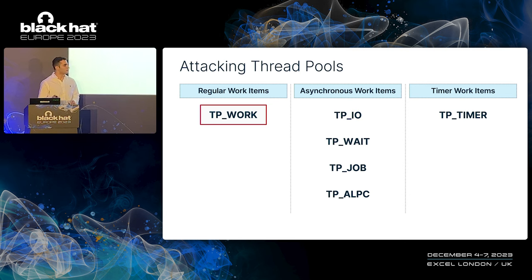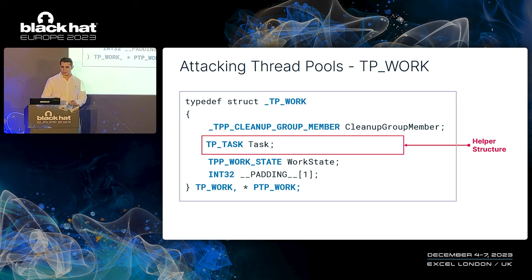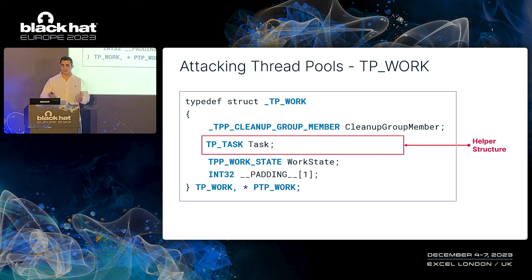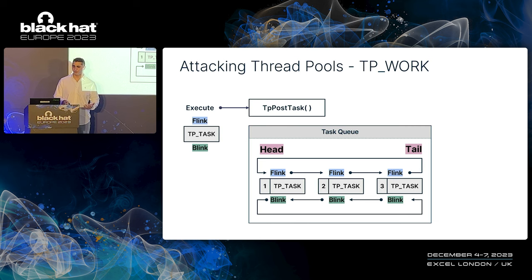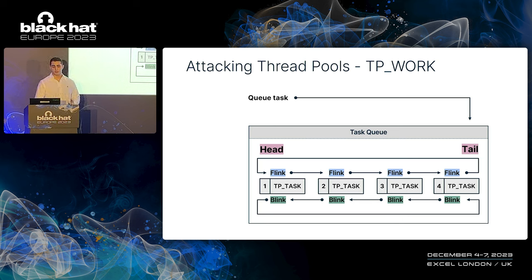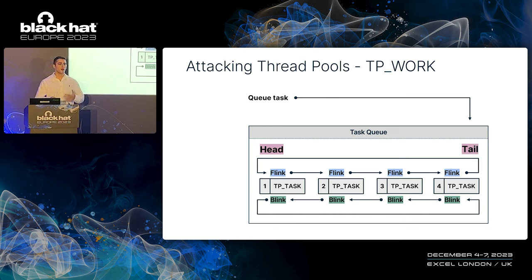Let's start with the regular work item, the TP work. By looking closely at the work item structure, I found its helper part called the task structure — this is what gets put in the task queue of the thread pool. The API responsible for posting a task to the thread pool's task queue is the TpPostTask API. The thread pool task queue is a doubly linked list of tasks. Calling the post task API on this queue will result in the task being queued to the end of the queue. Given the thread pool structure of the target process, we can tamper with its task queue to inject a malicious task into it.